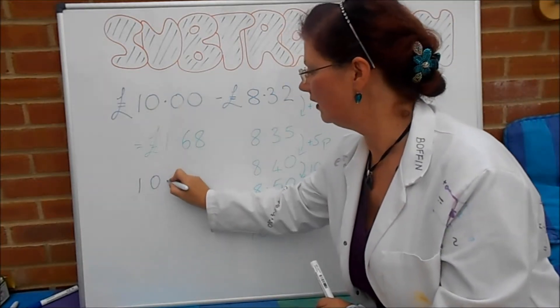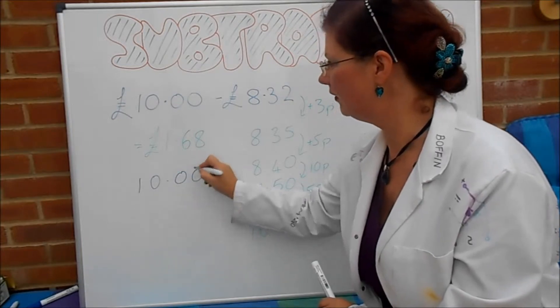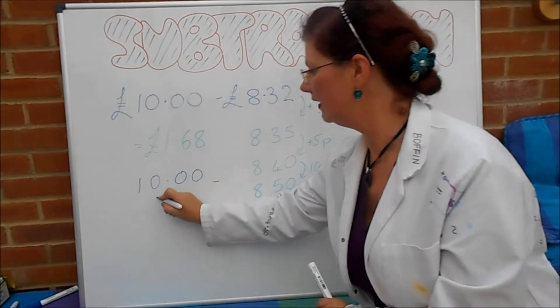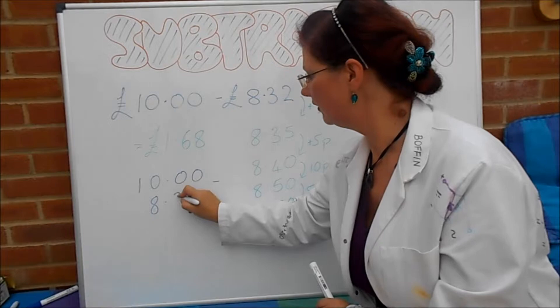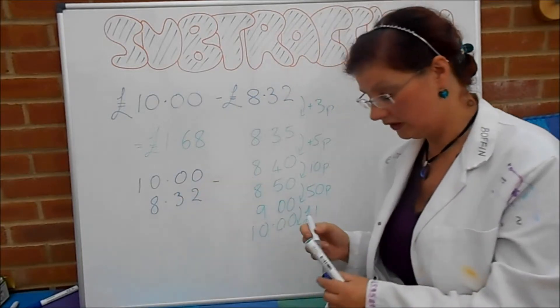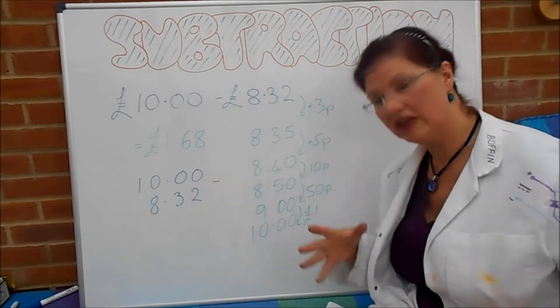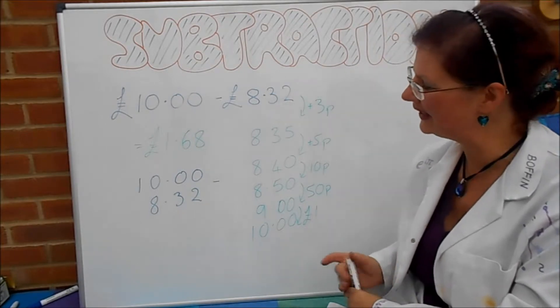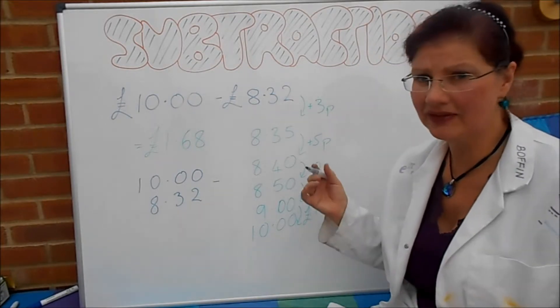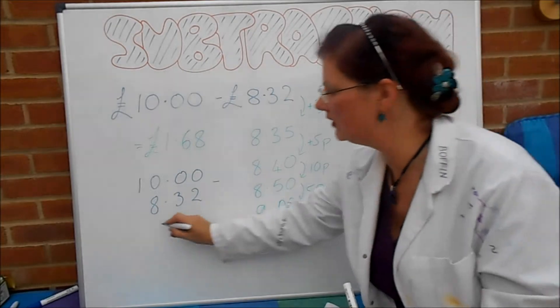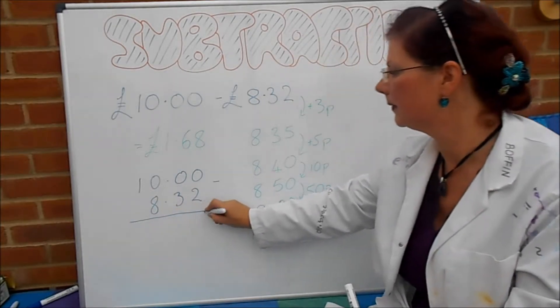So I'm going to write that as 10.00 take away 8.32. If you're not happy with the decimals, by the way, check out some of the other videos where I do subtracting the decimals and things like that. But it works exactly the same as all the others. There's no difference at all if it's decimals or not.